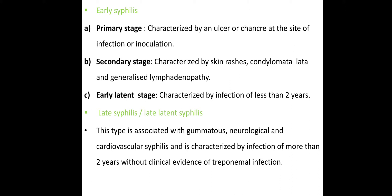Acquired syphilis can be classified into early syphilis and late syphilis. Early syphilis has three stages: primary stage, secondary stage, and latent stage. The primary stage is characterized by an ulcer or chancre, which is a painless lesion.